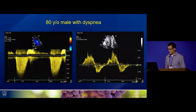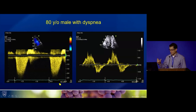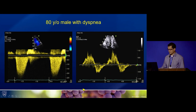Spectral Doppler is our window into hemodynamics. We see a peak TR velocity of about 2.2, and this may not necessarily be reflective of pulmonary pressures because of the amount of tricuspid regurgitation — we can underestimate the right ventricular systolic pressure. There are also very prominent systolic reversals in the hepatic veins.